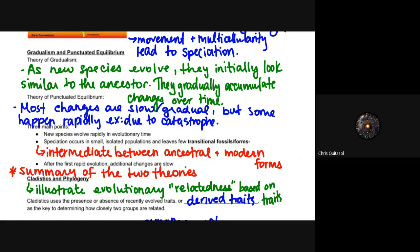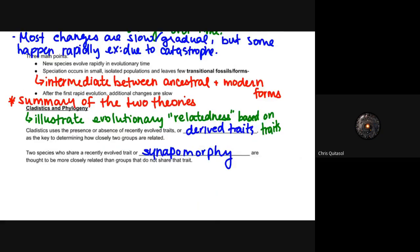Three main points just to remember: new species evolve rapidly in evolutionary time, speciation occurs in small isolated populations and leaves few transitional fossils or forms—these intermediates between ancestral and modern forms—and after a rapid evolution, additional changes are going to be very slow. It's basically the summary of those two theories above, but it's those three main points to take away from this.